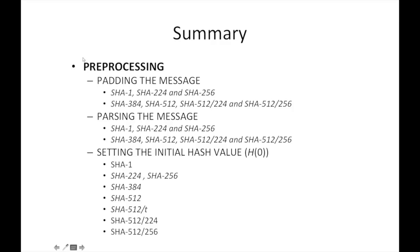To recap, the pre-processing is a very important step where we pad the message based on the algorithm family. Then we will pass the message based on that and set the initial hash value. This will change based on the algorithm family used. In case of SHA-1, we have seen we are using five initial hash values.